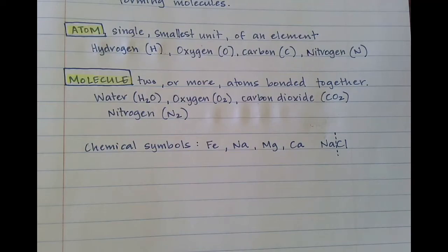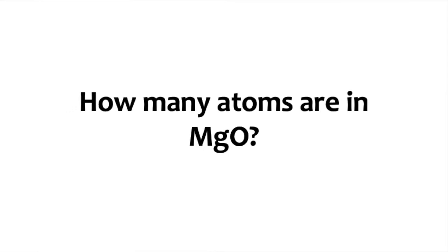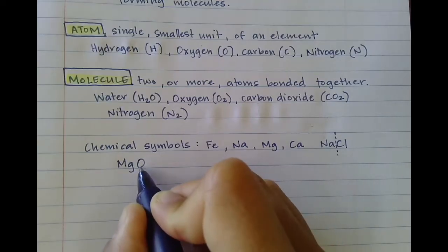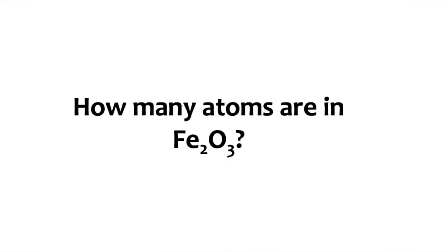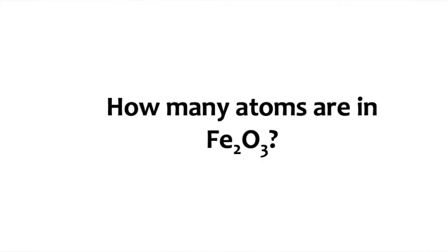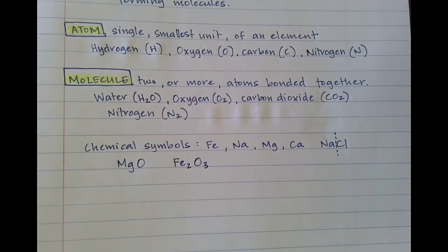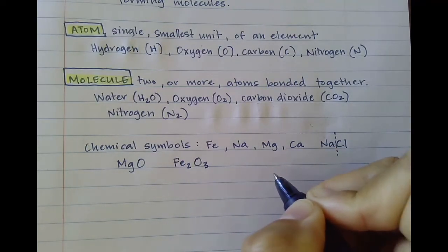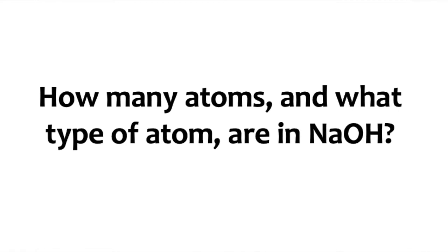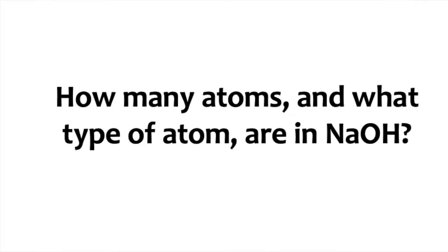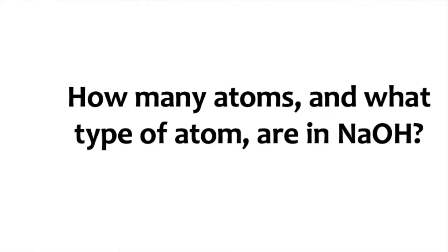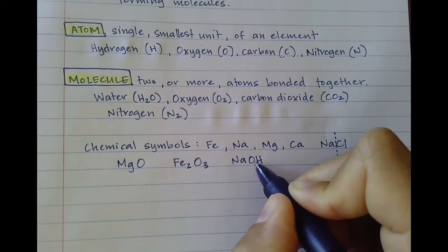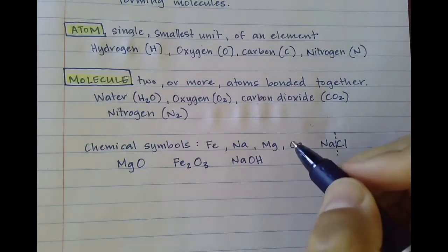Let's do some practice. How many atoms are in MgO? There are two — an Mg atom and an O atom. How many atoms are in Fe2O3? There are five total — two Fe (iron) and three oxygen. How many atoms and types of atoms are in NaOH? There is one Na, one O, and one H, for a total of three atoms.